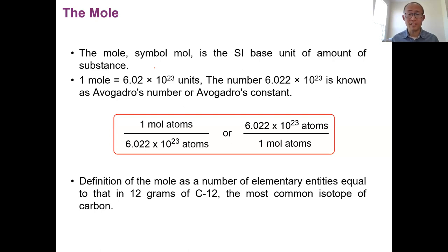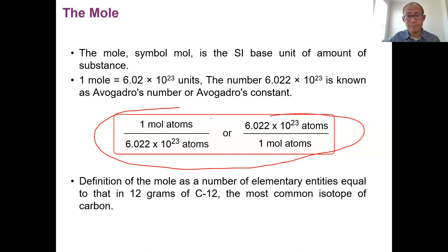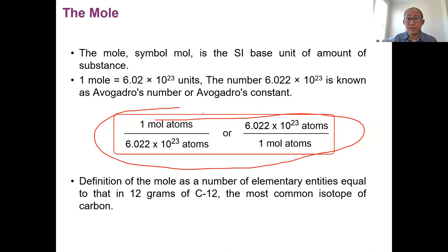Mole describes a quantity because now we can count atoms or molecules. Because one mole is 6.02 times 10 to the 23rd, we can create two conversion factors: one mole over 6.02 times 10 to the 23rd, or 6.02 times 10 to the 23rd divided by one mole. We're going to use these conversion factors in our later calculations.